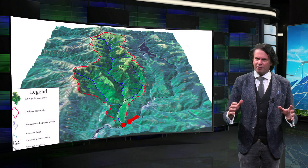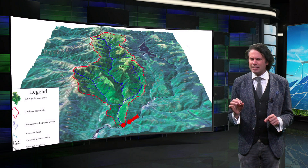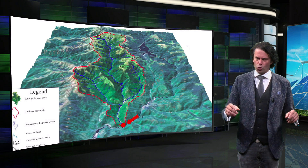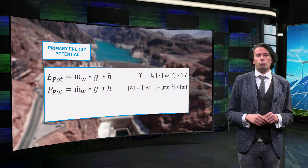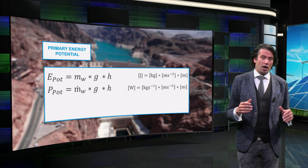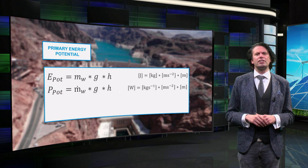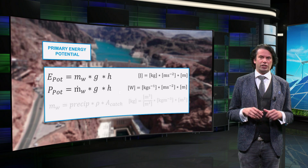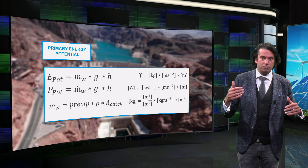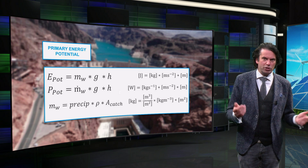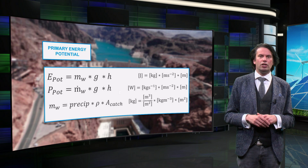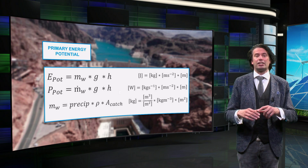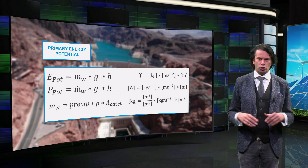If we know the size of this area, we can estimate the total energy potential of a certain region or dam. The water mass, m_water, is related to the precipitation according to this equation, where the precipitation is the amount of rainfall in cubic meters per square meter, rho is the density in kilograms per cubic meter, and A is the catchment area in square meters.